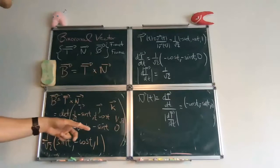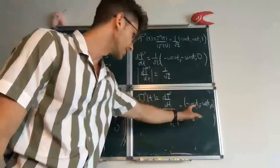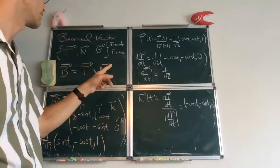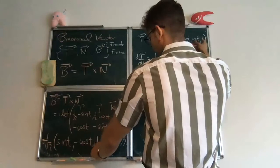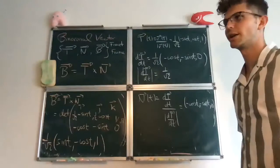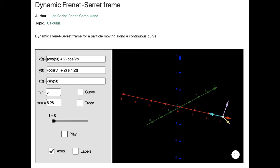And then you can check that it's orthogonal to this vector. And it's also orthogonal to the other one. This gives you minus sine squared, minus cosine squared, plus 1. Yeah, it's fine, so this is the binormal vector. So I'll show you an animation soon.